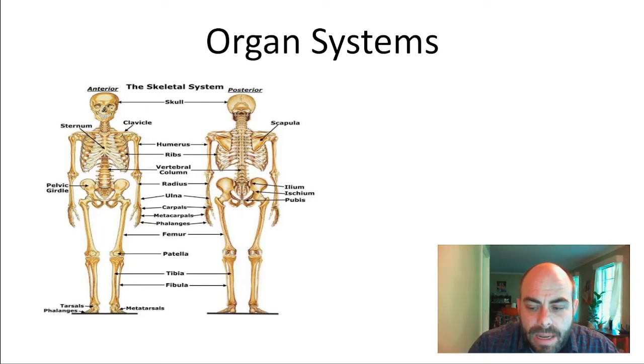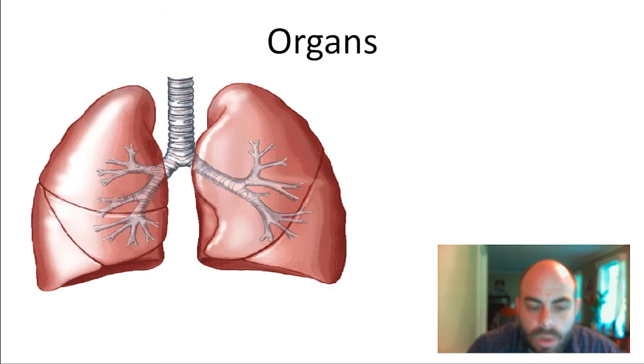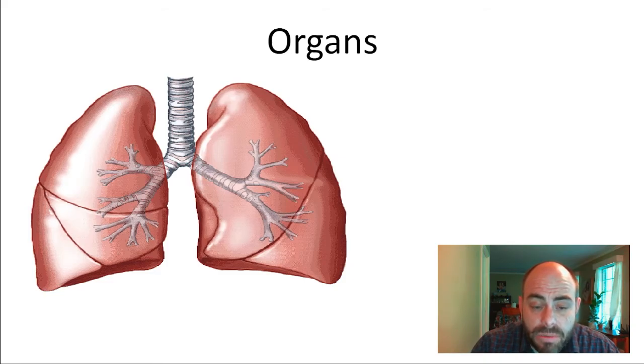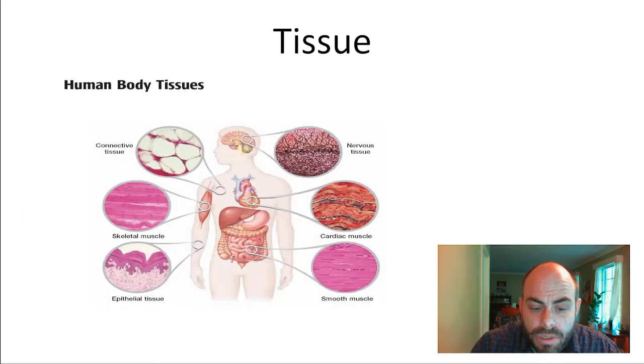And that is made up of organs. An organ is a group of tissues that perform closely related functions. The lungs are an organ. They do respiration. The trachea is an organ also. It has a particular function in the respiratory system, you get the idea. And organs are made up of tissues. Tissues are groups of similar cells that perform a specific function. So like skin cells or like muscle cells, you get the idea.